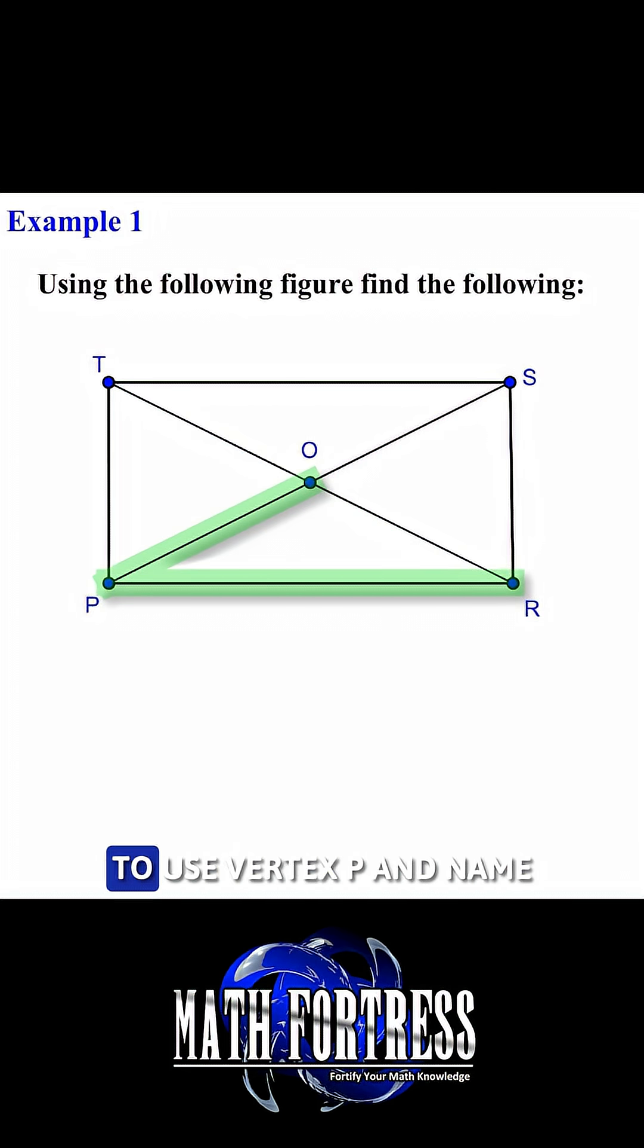Now you might be tempted to use vertex P and name this angle as angle P. Unfortunately, this would be incorrect since point P is also the vertex of another angle, specifically this one.